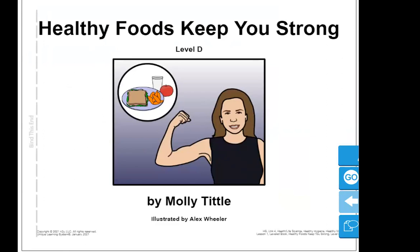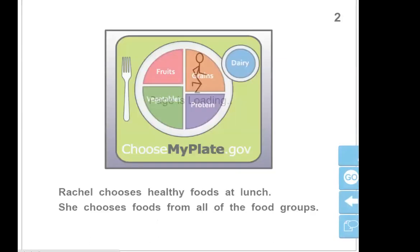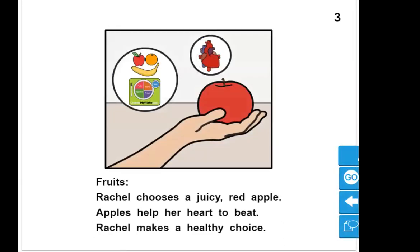Healthy foods keep you strong. The bell rings for lunch. Rachel is going to lunch. She knows healthy food gives her body energy. Rachel chooses healthy foods at lunch. She chooses foods from all the food groups. Fruits: Rachel chooses a juicy red apple. Apples help her heart to beat. Rachel makes a healthy choice.